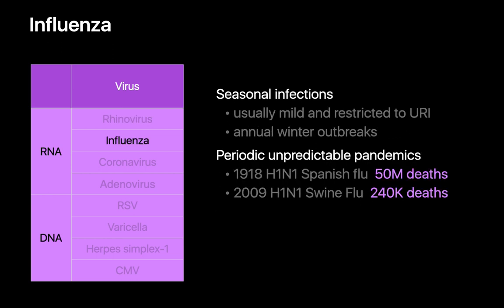Influenza outbreaks occur every winter. Most cases are mild and restricted to the upper respiratory tract. However, some can progress to pneumonia and even lead to complications such as ARDS. Large devastating influenza pandemics have occurred every couple of decades, including the Spanish flu during the early 20th century that was responsible for 50 million deaths, and the more recent swine flu pandemic in 2009.